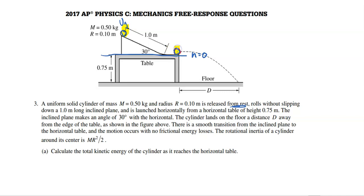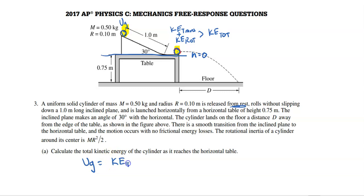At the top point it has all gravitational potential energy — it is released from rest, so it's not moving. At the bottom it has all kinetic energy. Keep in mind if it's rotating, it has both KE rotational and KE translational, so the total kinetic energy will be the sum of those two things. KE total equals the sum of those, and UG equals KE total.